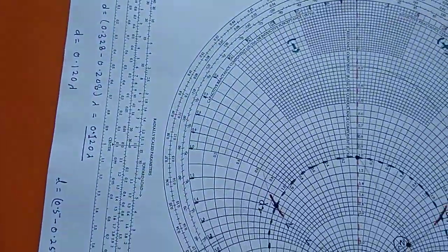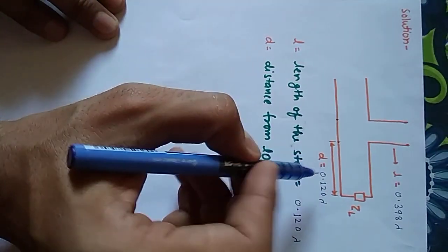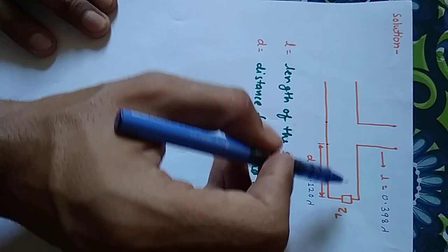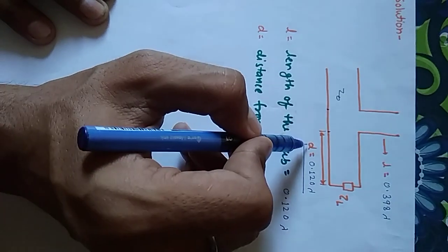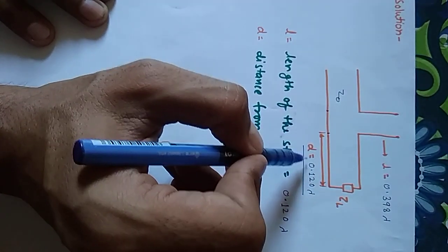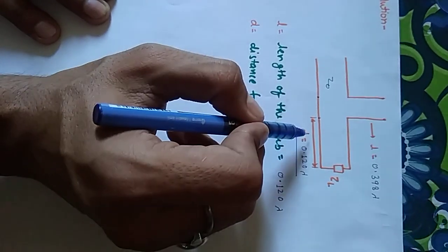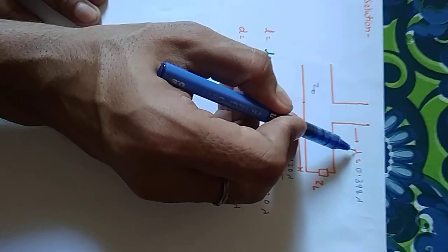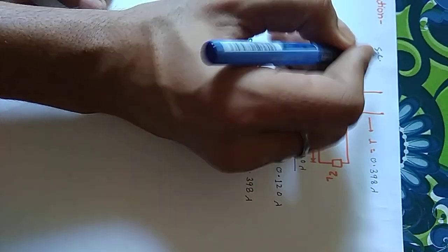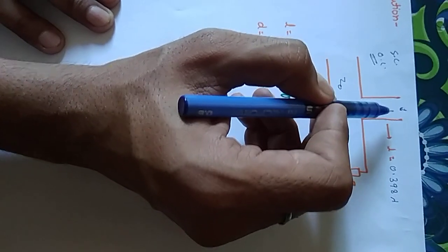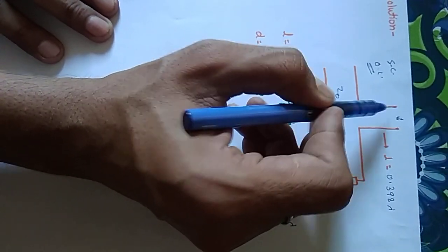We have the load and the characteristic line of impedance Z0. We are going to insert a stub to match the load with Z0. The first task was to find D — the distance where we insert the stub — which is 0.120 lambda. Our next task is to find the length of the stub. We can design either a short-circuited stub or an open-circuited stub. We have taken our problem for an open-circuited stub.